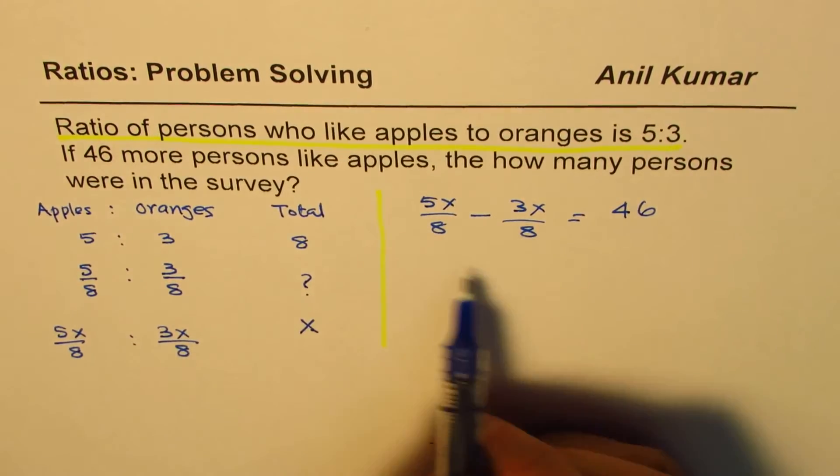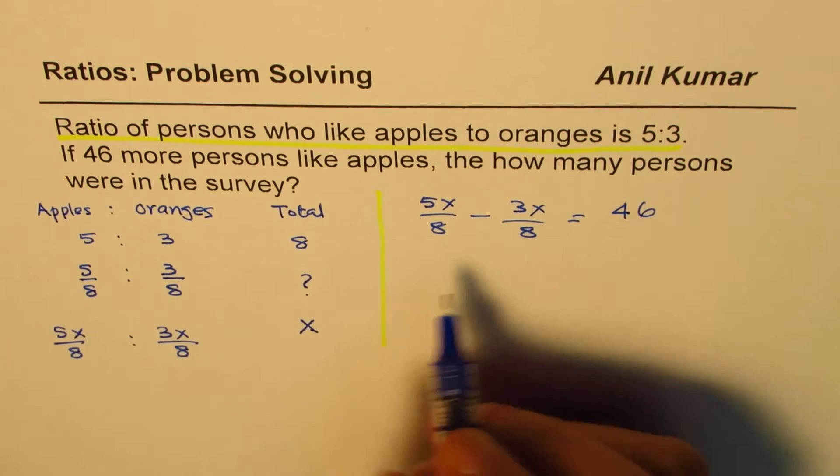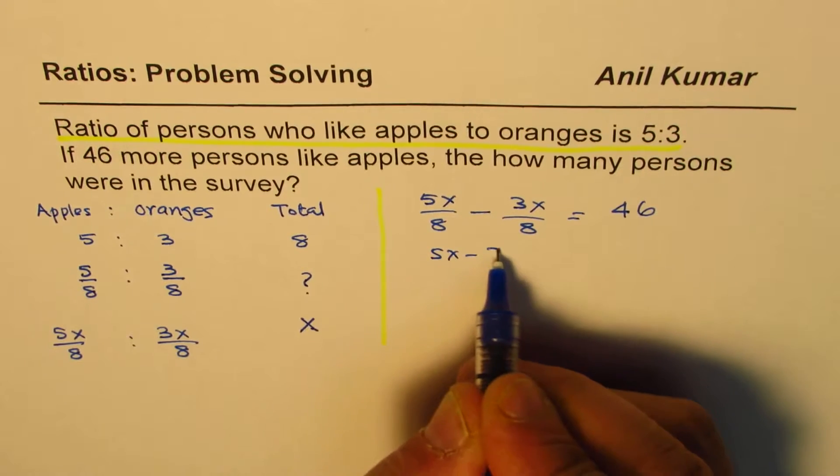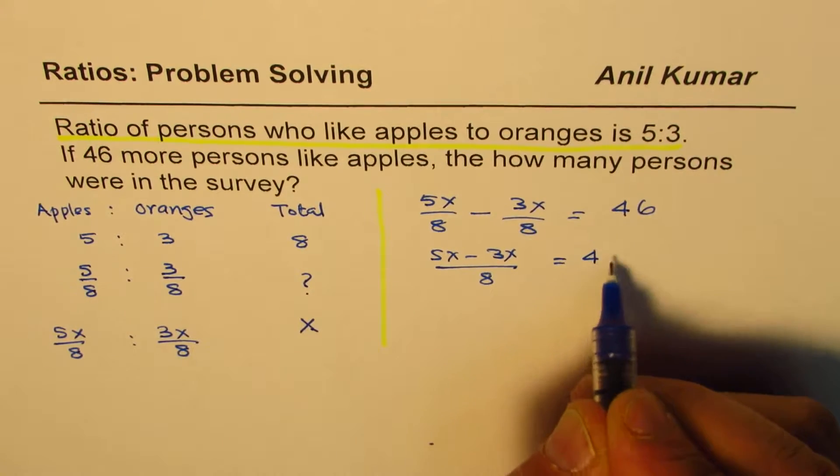So we get kind of fraction, 5X minus 3X over 8. This is same as 5X minus 3X over 8. 8 is the common denominator is 46.